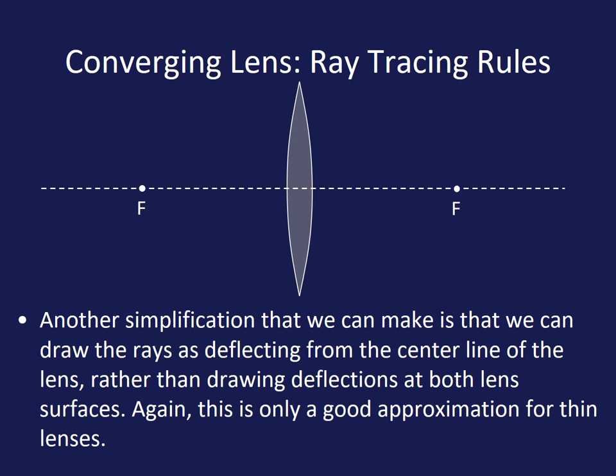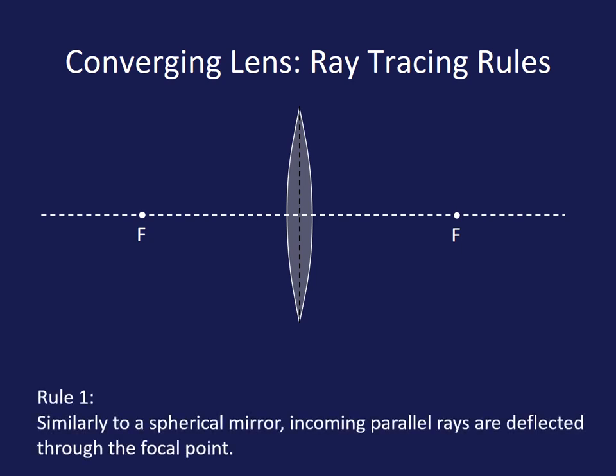So we've got some rules that we're going to have to check out here. All lines of light that come in parallel to our principal axis are going to be bent through the focal point. There's two examples and that is our first rule. Any line coming in parallel to the principal axis will be refracted down towards our focal point.